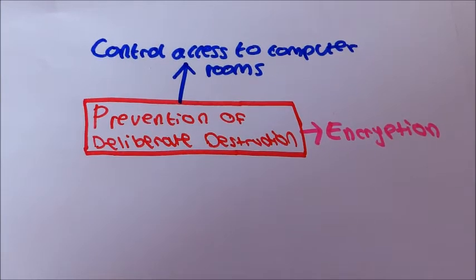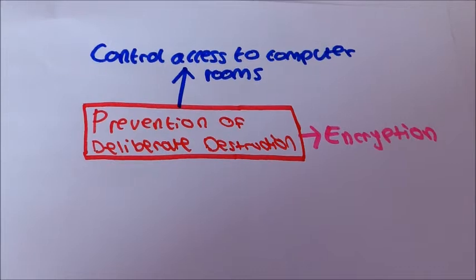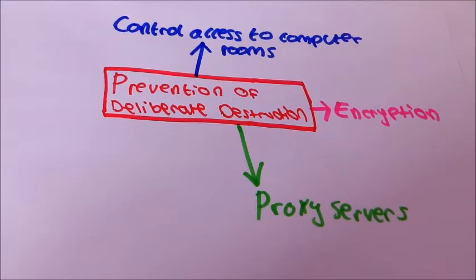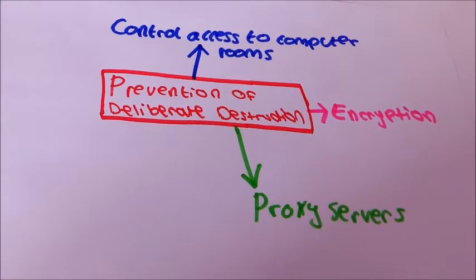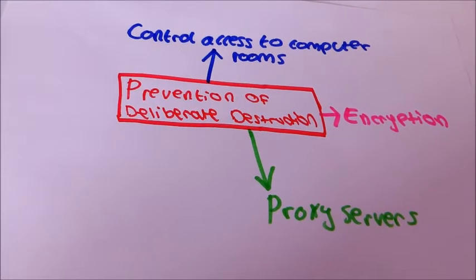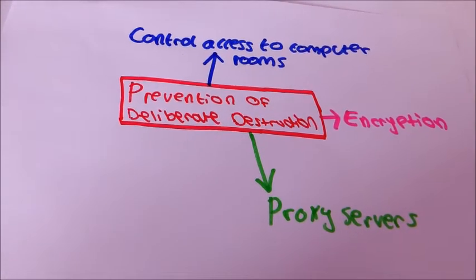Another method is encryption which ensures integrity of transmitted data which prevents data theft. Proxy servers can be used to prevent deliberate destruction as they limit or block access to certain web addresses. This ensures that employees follow the code of conduct and it prevents employee malicious damage.